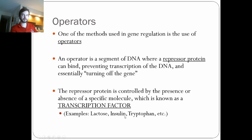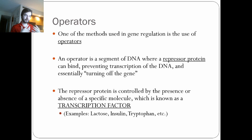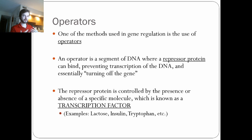Same thing with insulin. Insulin is for the metabolism of sugar. So when you eat a lot of sugar and you have high blood sugar, your body will produce insulin in order to metabolize that sugar and lower your blood sugar. But insulin will not be produced all the time — you don't want insulin to be constantly being produced in the body.